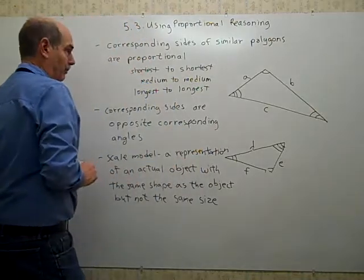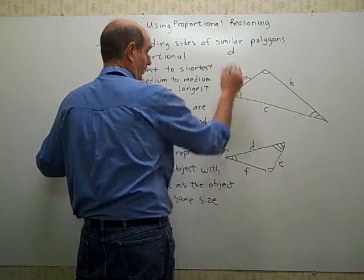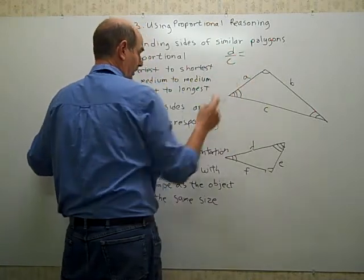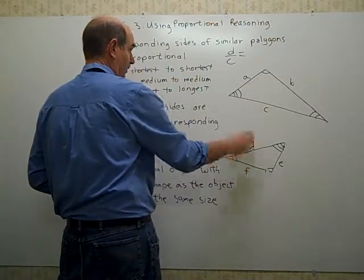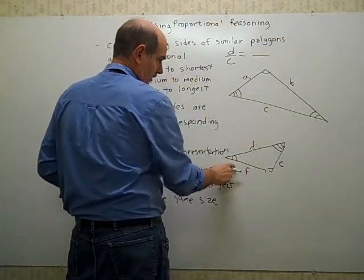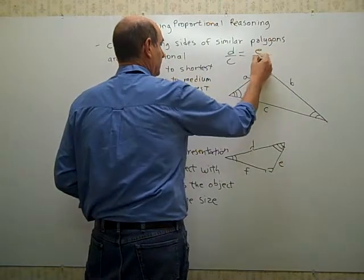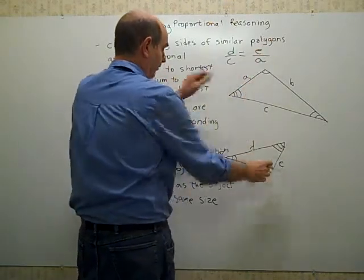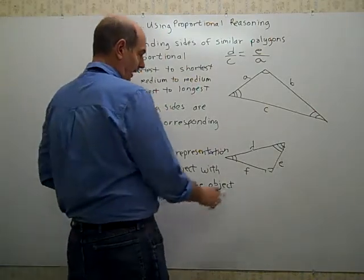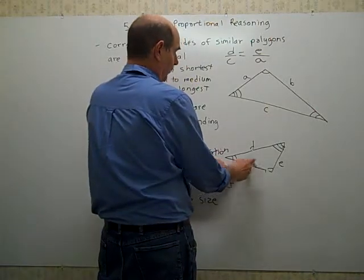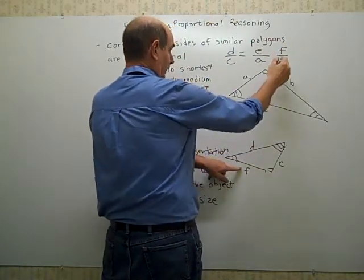To say these four proportions would be to say that D compared to C will be the same as, and since I put the side length of the smaller triangle at the top, I have to do it again here. E corresponds to A, because those are both the shortest sides. And then my other one would be D... F would correspond to B.